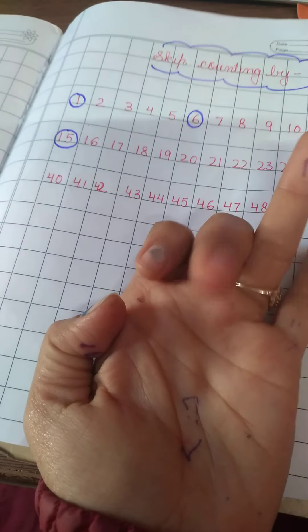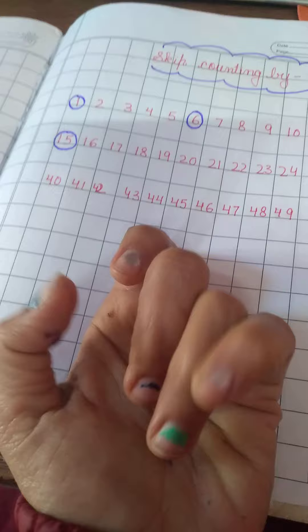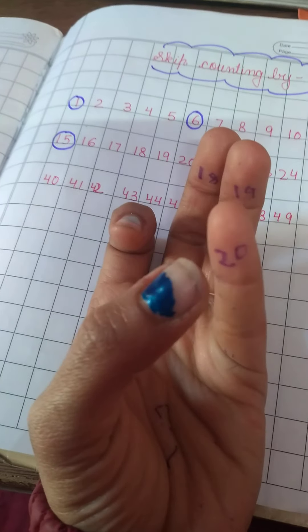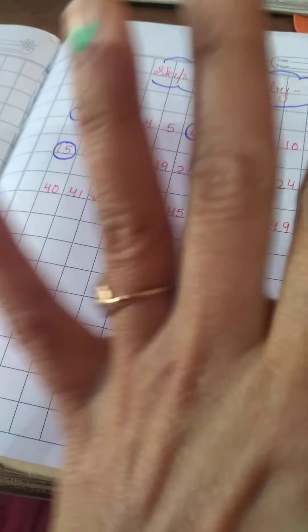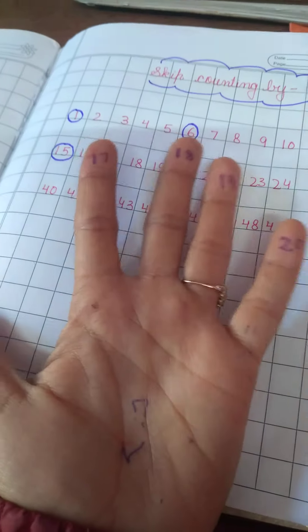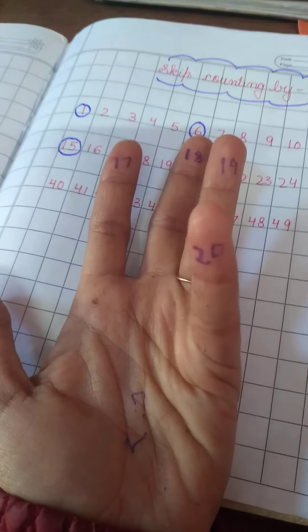So after 15: 16, 17, 18, 19, and 20. Means 20. 20 is the fifth number. We have five fingers. We have five numbers. And this one is the fifth number.